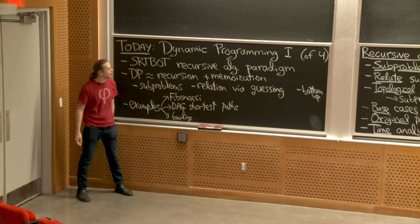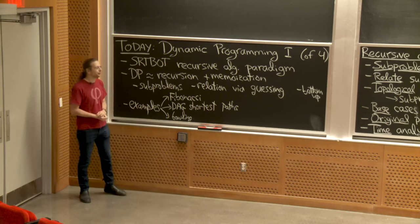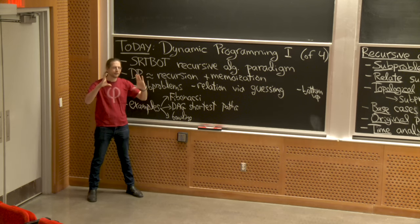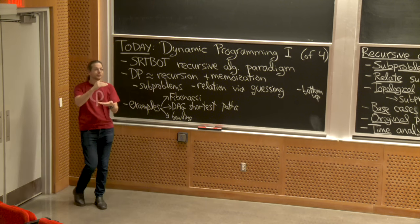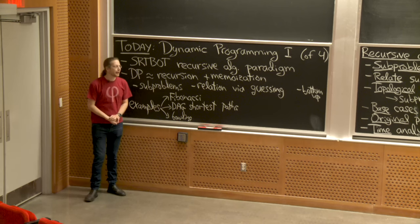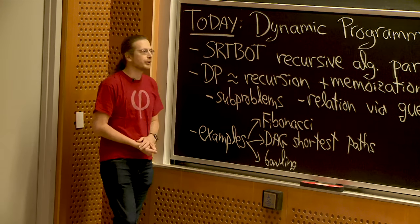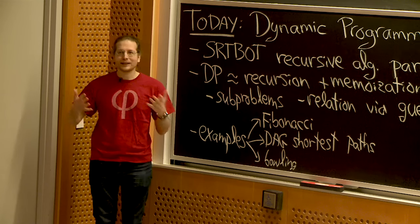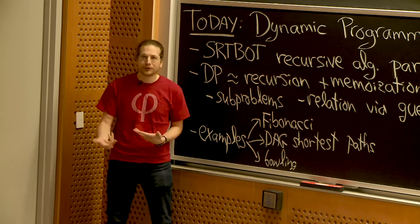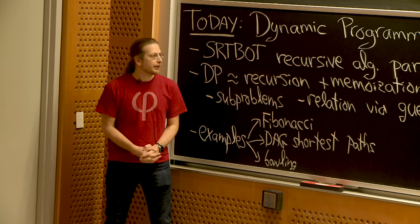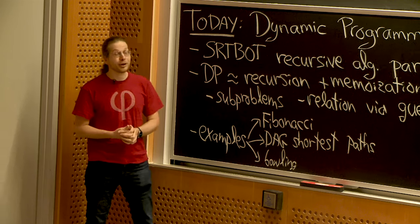Dynamic programming is a particular type of recursive algorithm design. In general, all of algorithms is about recursive algorithm design at some level, because we want to write constant-sized pieces of code that solve problems of arbitrary size. We have to write code that is recursive, or uses loops, or somehow reuses instructions. Taking the recursive view fits well with proof by induction and gives us structure on subproblem relationships in something called a subproblem graph.